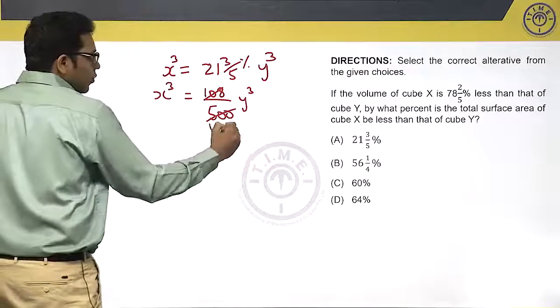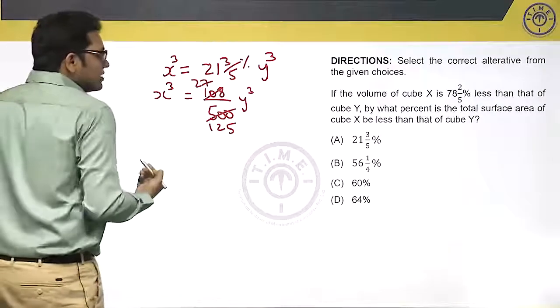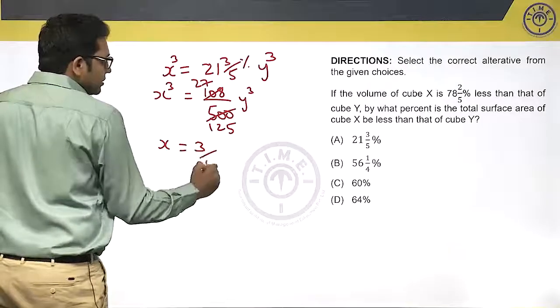If we cancel, 125, this is 27. So x³ equals 27y³ by 125. Therefore x equals 3/5 y.